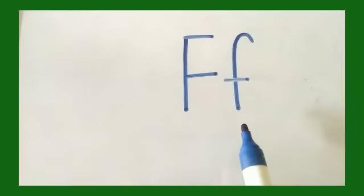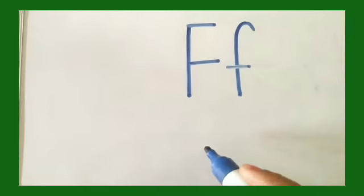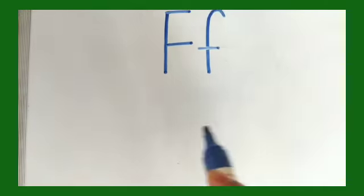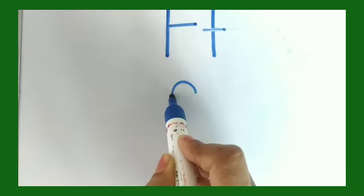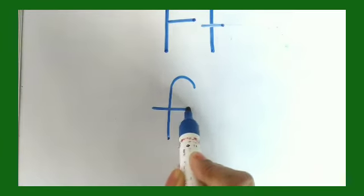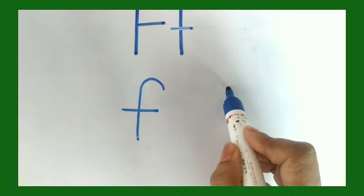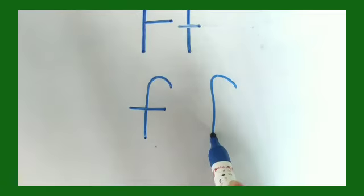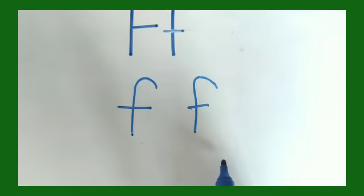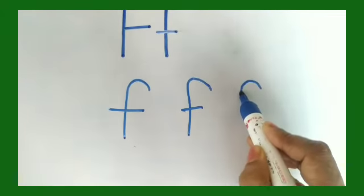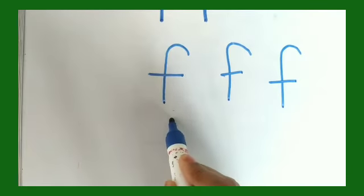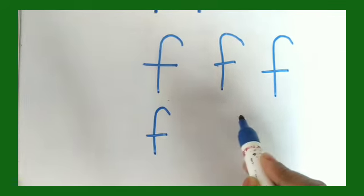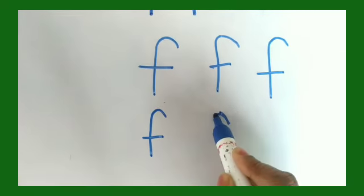So how do we write small letter F? You will take your pencil, hold it, and then make a curve on top and come down, then a sleeping line — letter F. Let's practice once more: curve and come down, and a sleeping line — letter F. Make a small curve, come down, and a sleeping line — letter F.